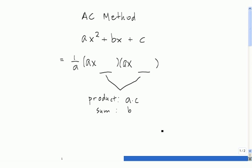So in using the AC method to factor a quadratic, we're looking for numbers that satisfy this. The product is a times c and the sum is the middle coefficient b.